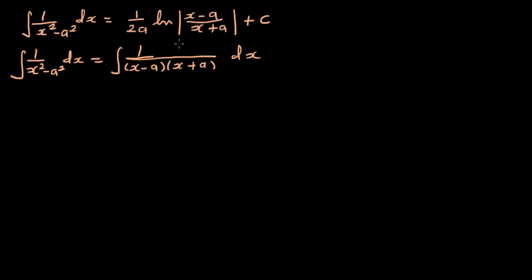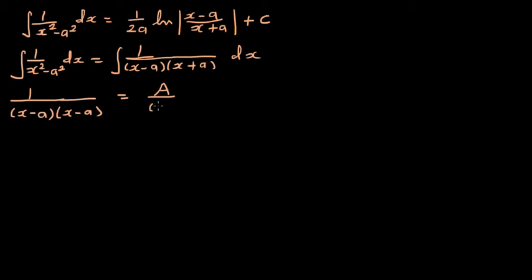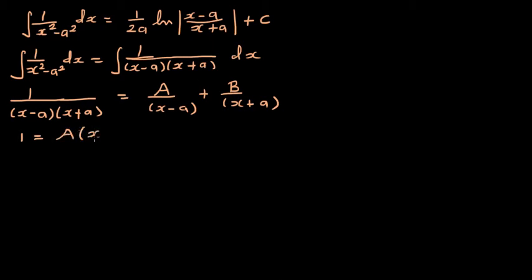Now I'm going to simplify this using partial fraction decomposition. We can write 1 over x minus a times x plus a as A over x minus a plus B over x plus a. Comparing left with right, we get: 1 equals A times x plus a plus B times x minus a.